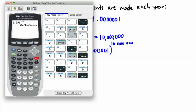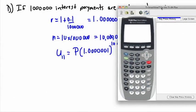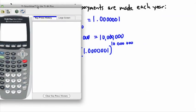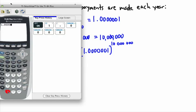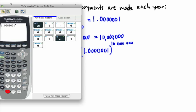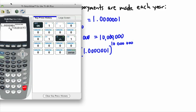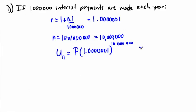This is the extreme example — and there is a reason I'm doing this. Calculating 1.0000001 to the power of 10,000,000 gives 2.71828. So the amount after 10 years is P times 2.71828, and it keeps going.